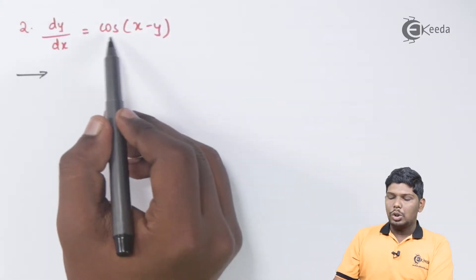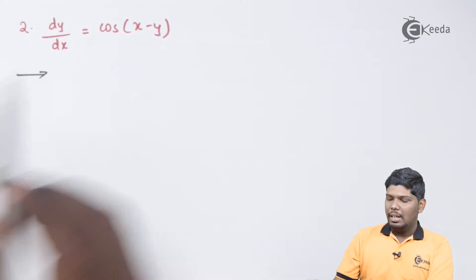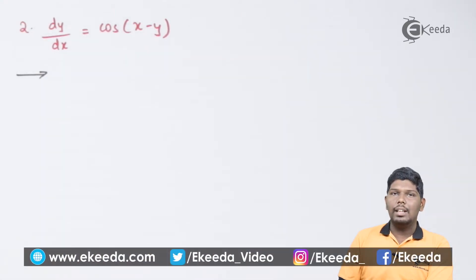We have dy by dx equals cos(x - y). If I expand cos using the formula cos(a - b), we are not able to separate x and y. So in this case, we can directly substitute this angle, x minus y, as v.